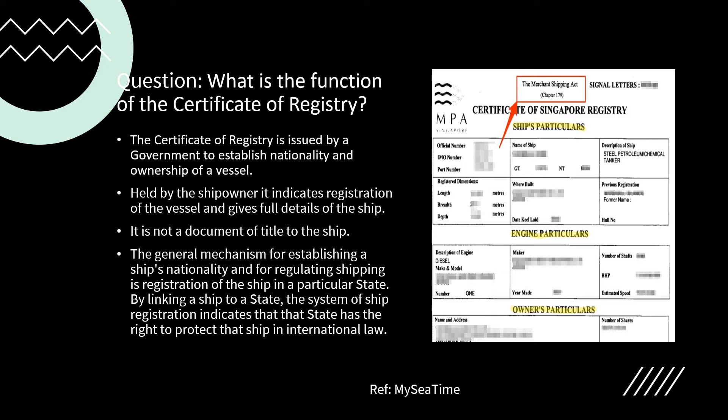What is fundamental for regulating shipping is the registration of the ship in a particular state. It registers the ship in a particular state, and that becomes the nationality of the ship. By linking a ship to a state, the system of ship registration indicates that the state has the right to protect that ship in international legal matters. The certificate of registry is issued by a government to establish the nationality and ownership of a vessel.